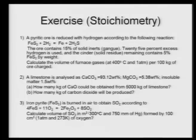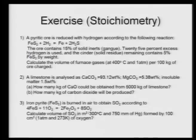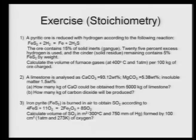Problem 1: A pyritic ore is reduced with hydrogen according to FeS₂ + 2H₂ = Fe + 2H₂S. The ore contains 15 percent solid inerts (gangue). Twenty-five percent excess hydrogen is used, and the cinder (solid residue) contains 5 percent FeS₂ by weight. Calculate the volume of furnace gases at 400°C and 1 atmosphere per 100 kg of ore charge.